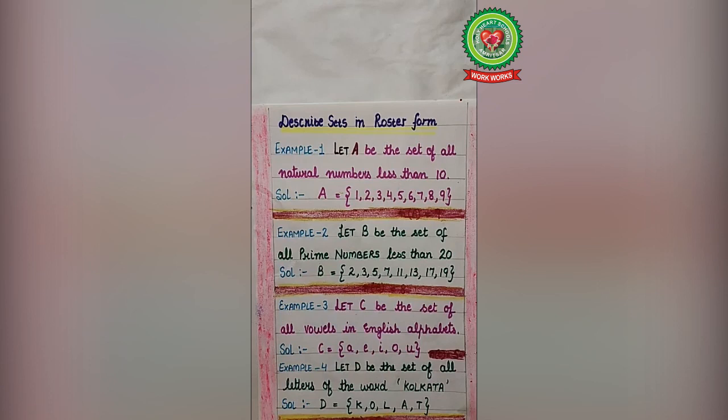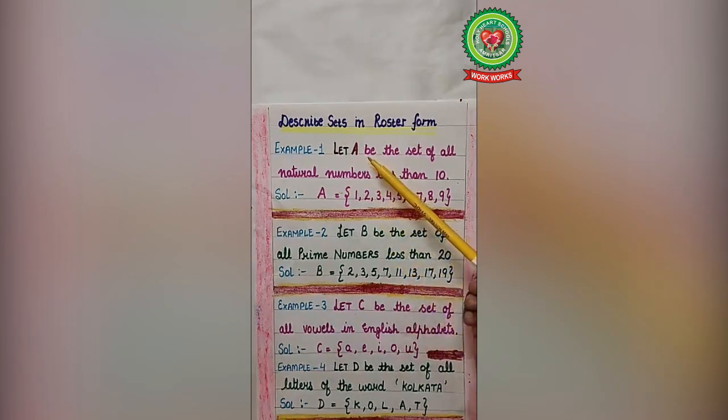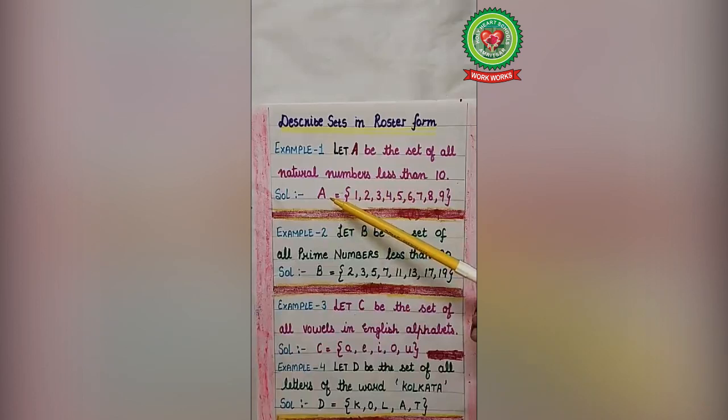Let's discuss few examples. Describe sets in roster form. Let A be the set of all natural numbers less than 10. First rule is name of the set in capital letter. So here name is given capital A. Start with curly bracket. Now natural numbers less than 10 are 1, 2, 3, 4, 5, 6, 7, 8, 9. Now curly bracket close. All elements or members are separated by commas. So this is the way to write a set in roster form.